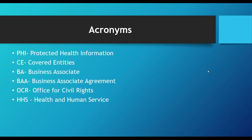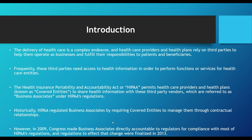Here are the key acronyms we'll be using: PHI stands for Protected Health Information — a definition from HIPAA itself; CE is Covered Entity; BA is Business Associate; BAA is Business Associate Agreement — the contract you sign with a business associate; OCR is the Office of Civil Rights; and HHS is the Department of Health and Human Services.